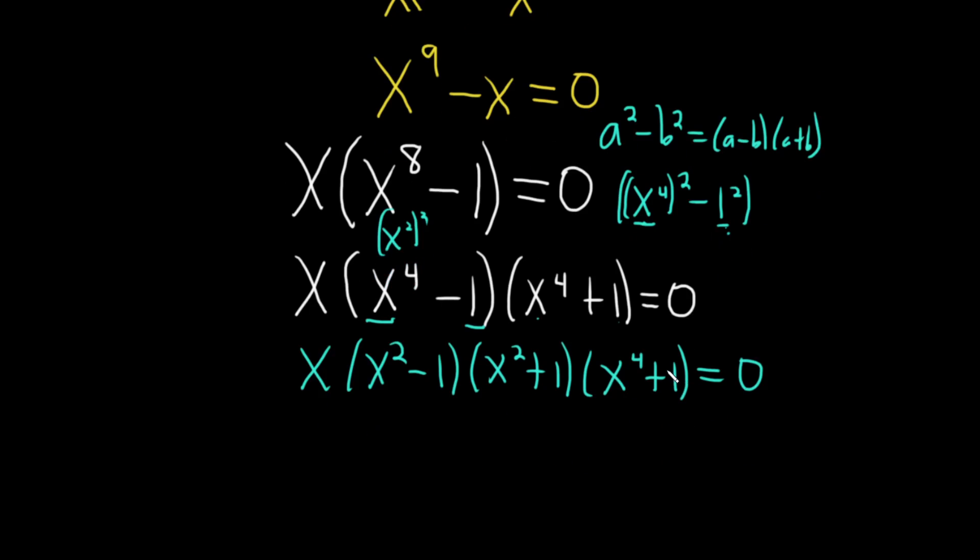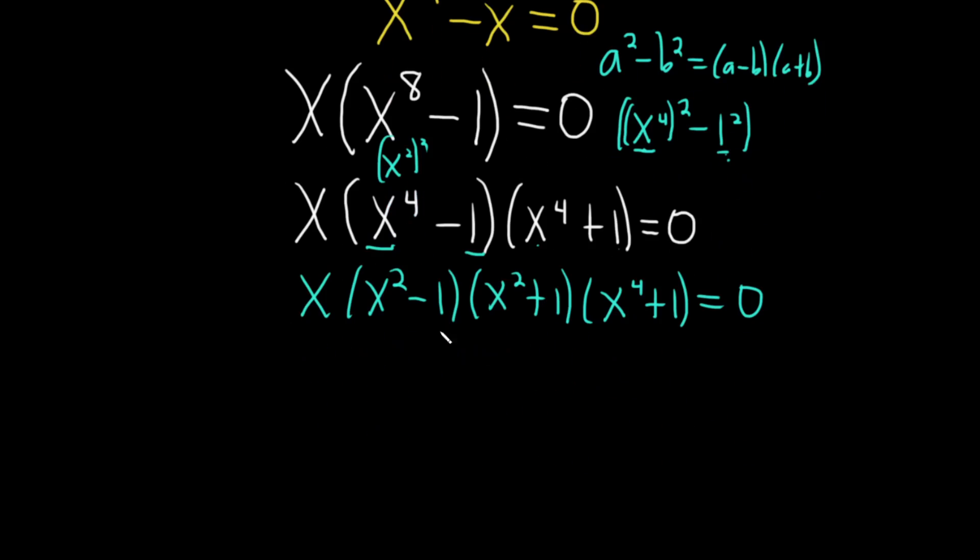And then you could do it again, right? Because this factors again, difference of squares again. So this is x minus one, x plus one, x squared plus one. And then x to the fourth plus one. And that's equal to zero.